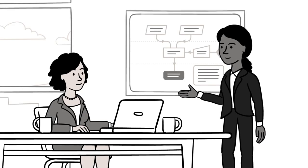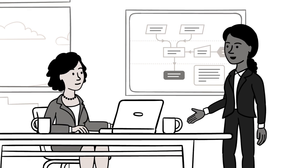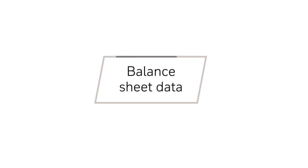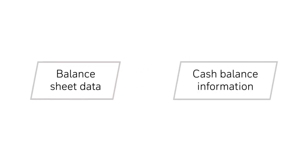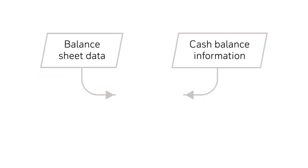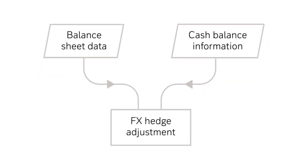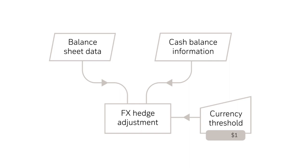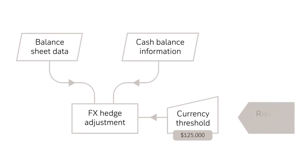Sarah works with the FX team at Deutsche Bank to adapt her existing spreadsheet tool. They create a process that automatically reads balance sheet data, combines it with the cash balance information used for Thomas's solution and generates FX hedge adjustments. Hedging small amounts would be inefficient, so Sarah applies thresholds for each currency based on the organisation's risk tolerances.